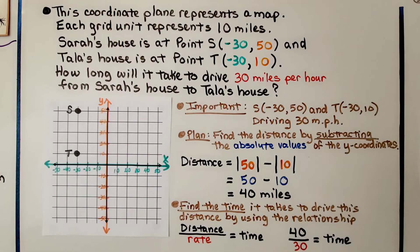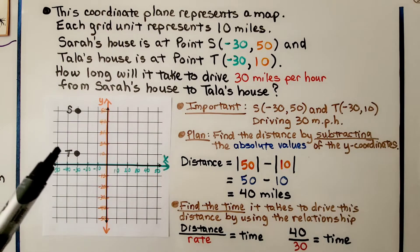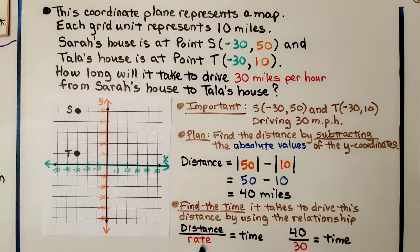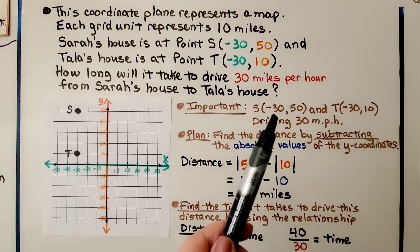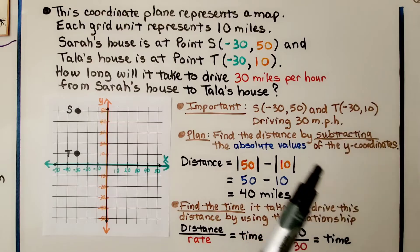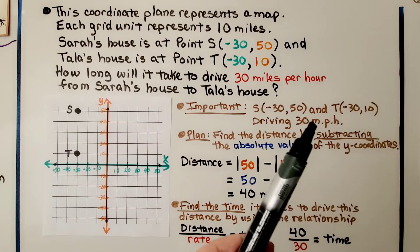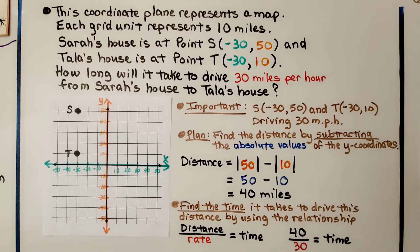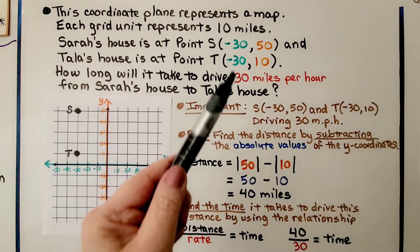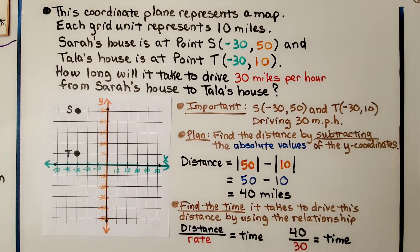How long will it take to drive 30 miles per hour from Sarah's house to Tala's house? The important information is the ordered pairs for S and T, and that they'd be driving 30 miles per hour. Our plan is to find the distance by subtracting the absolute values of the y-coordinates, since they have the same x-coordinates.